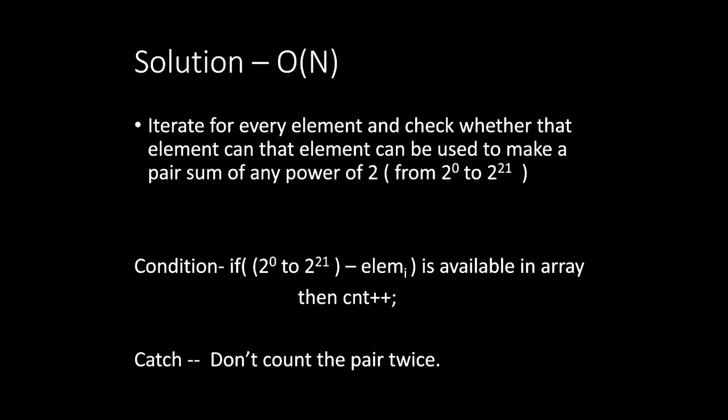Let's see the O(n) solution for this problem. We need to iterate for every element and check whether that element can be used to make a pair sum of any power of 2. In the problem we're given that the element cannot exceed 2 power 20, so if we add 2 elements of 2 power 20, it can maximum go to 2 power 21.